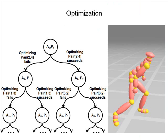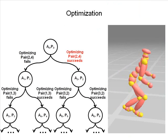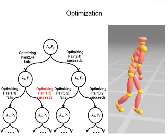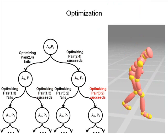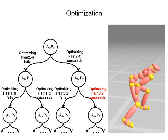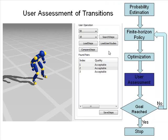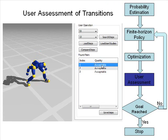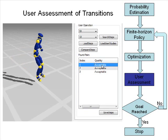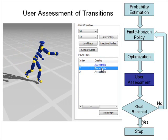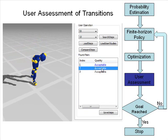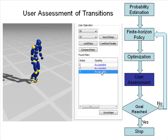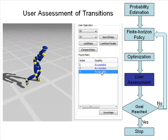Continuous optimization is then invoked on each pair in the order specified by the policy. If optimization succeeds, the generated transition is added as an edge to the graph. In addition, the user has an opportunity to classify some transitions produced by optimization as unnatural. This requires a minimal effort from the user, as shown by our user study, but guarantees a graph with only natural transitions.